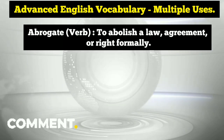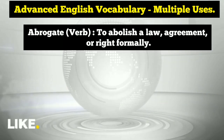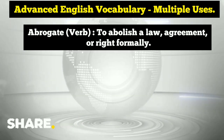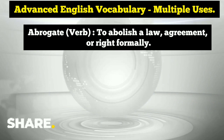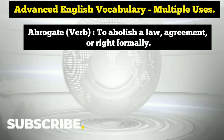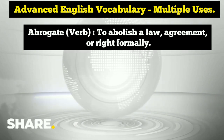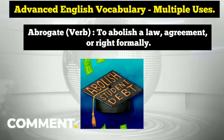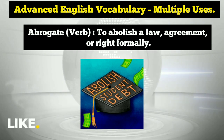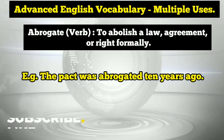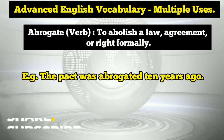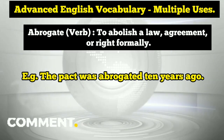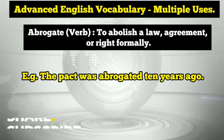Up next, the word 'abrogate.' It is used as a verb and means to abolish a law, agreement, or right formally — to abrogate, which you might also say means to revoke a law or agreement formally. For example: 'The pact was abrogated ten years ago,' meaning it was abolished or revoked. Note that 'pact' means an agreement or treaty.